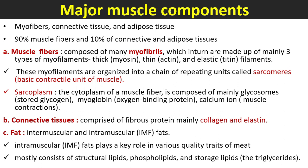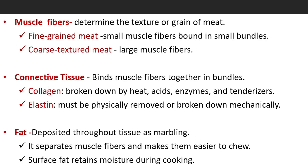These myofilaments are organized into a chain of repeating units called sarcomeres, which is the basic contractile unit of muscle. The sarcoplasm — the cytoplasm of a muscle fiber — is composed mainly of glycosomes (stored glycogen), myoglobin, and calcium ions. Connective tissues comprise fibrous proteins, mainly collagen and elastin.